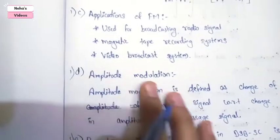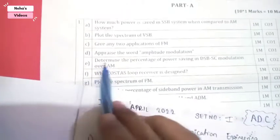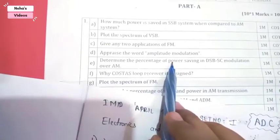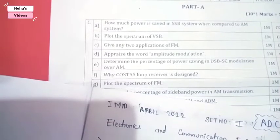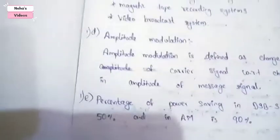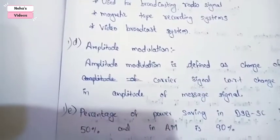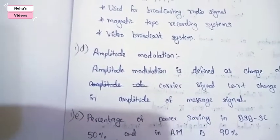The next question asks to determine the percentage of power saving in DSBSC modulation over AM. Similar to the first question, in DSBSC 50% of the power is saved when compared to AM, and in AM 90% of the power is saved.